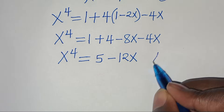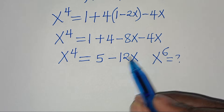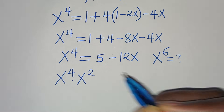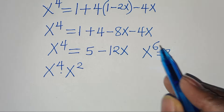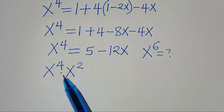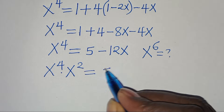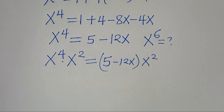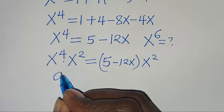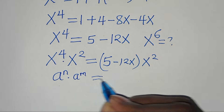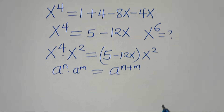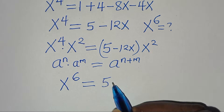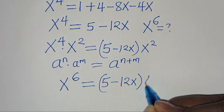Now, since we are solving for x to the power of 6, let's multiply both sides by x to the power of 2. So we have x to the power of 4 times x to the power of 2 on the left, and 5 minus 12x multiplied by x to the power of 2 on the right. Using the exponent rule a to the power of n times a to the power of m equals a to the power of n plus m, this gives us x to the power of 6 equal to 5 minus 12x multiplied by x to the power of 2.